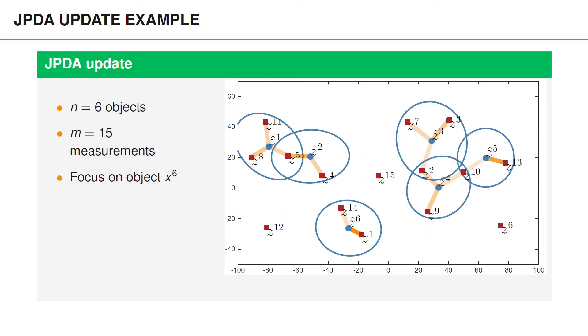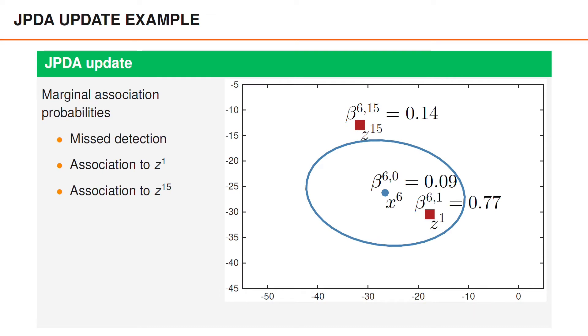We can illustrate the JPDA merging using an example. So here we have the 6 objects and 15 measurements again. So this time, we are going to focus on object 6, and the 2 measurements that fall inside its gate. For this object, the prior density is now shown in blue, and we have 2 detections shown as red squares. We have marginal association probabilities for misdetection equal to 0.09, association to measurement 1 equal to 0.77, and association to measurement 15 equal to 0.14.